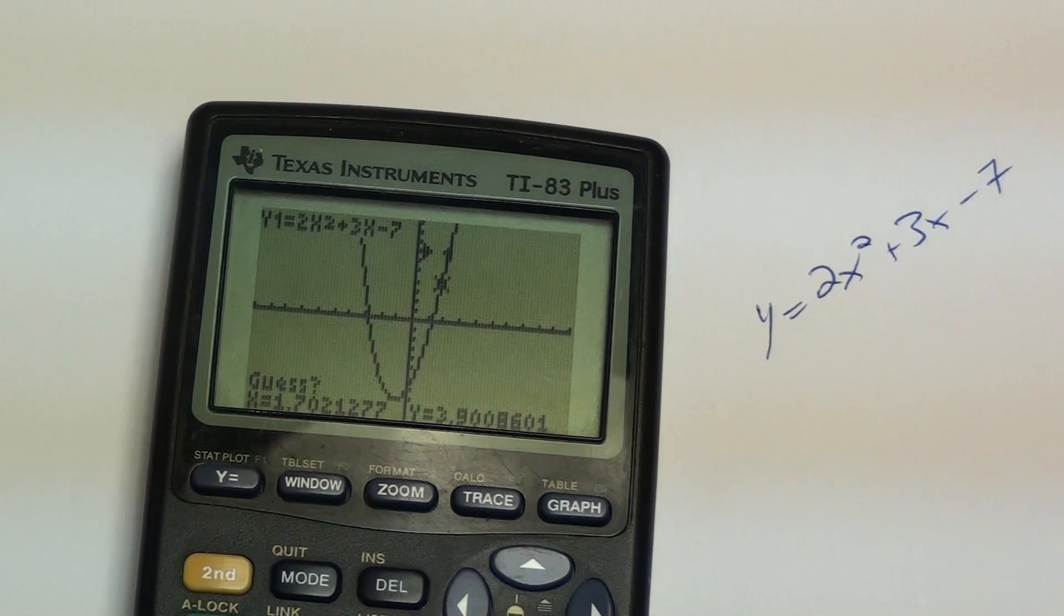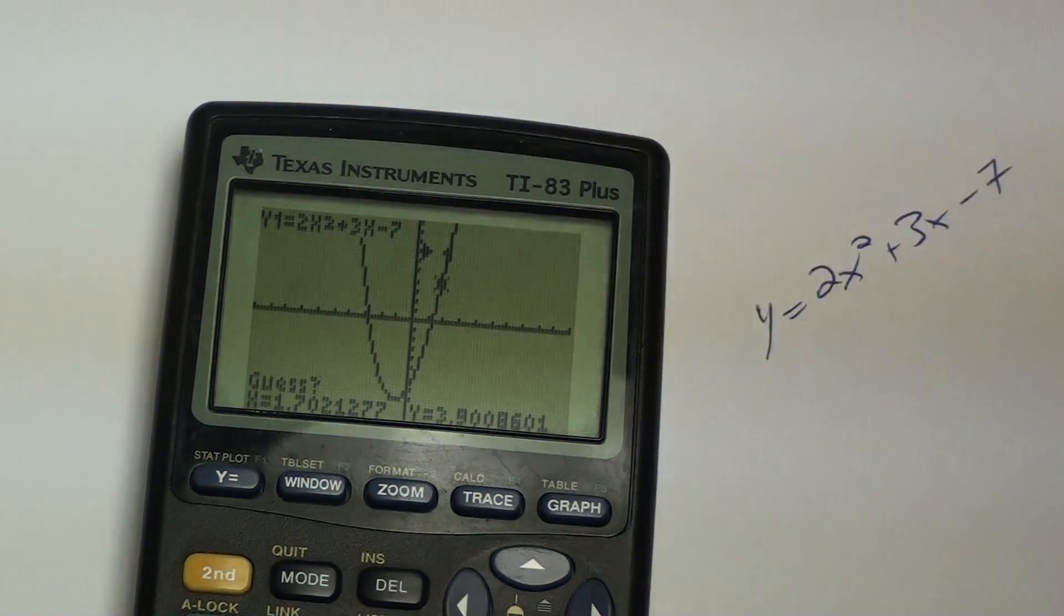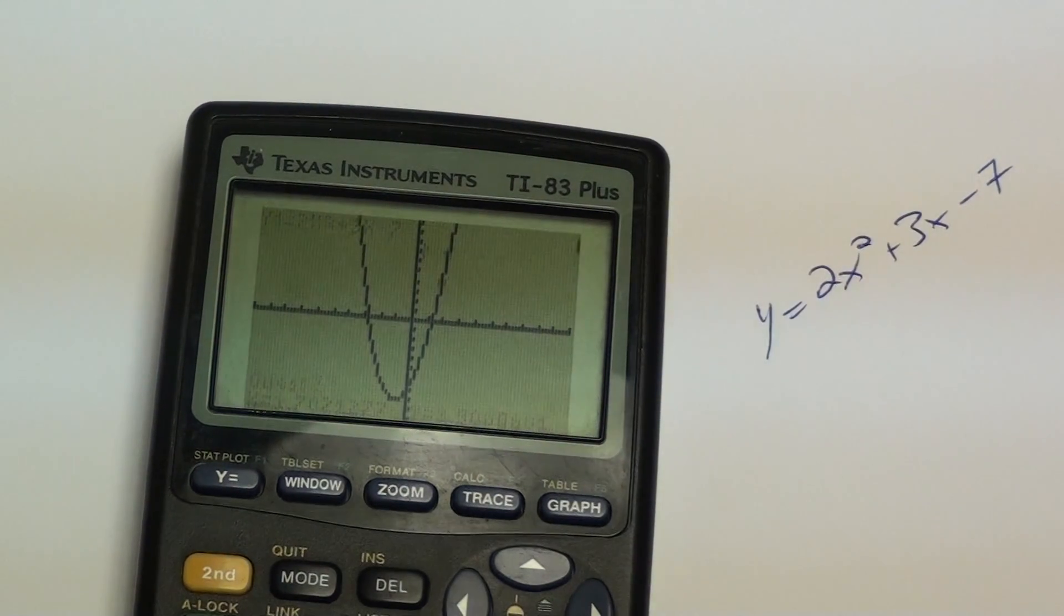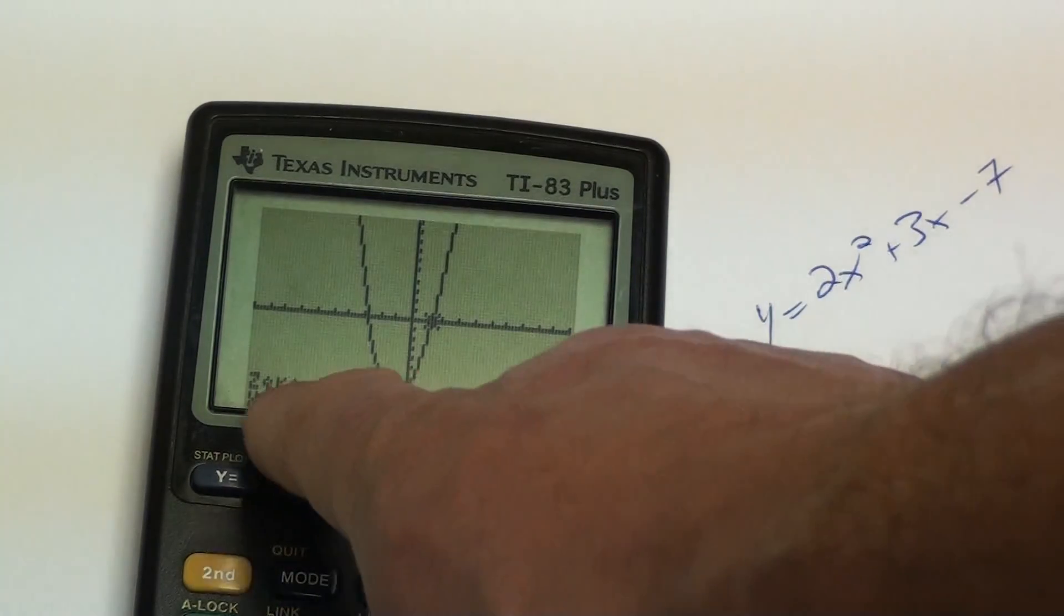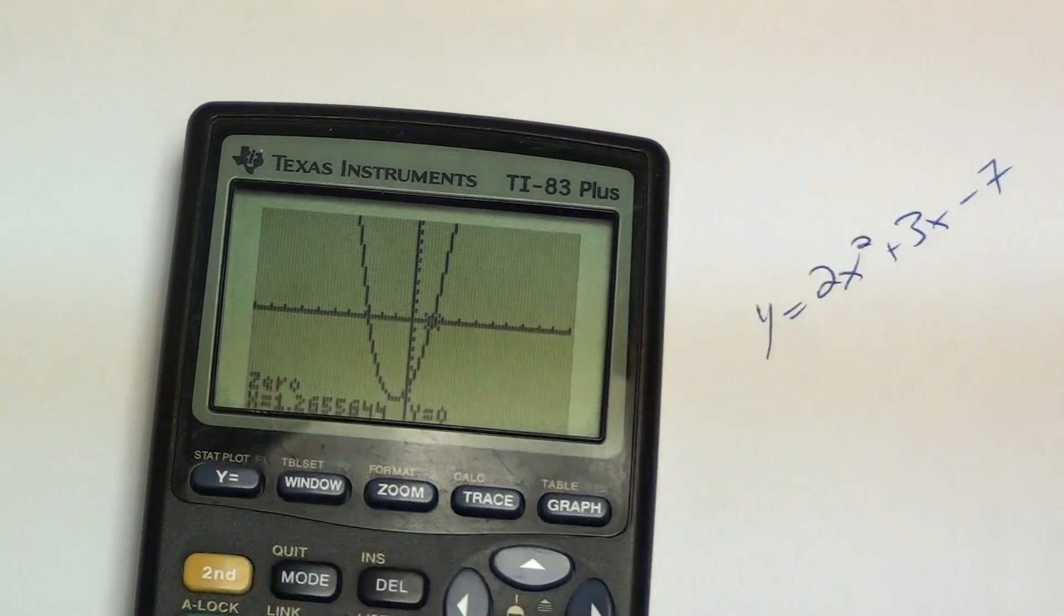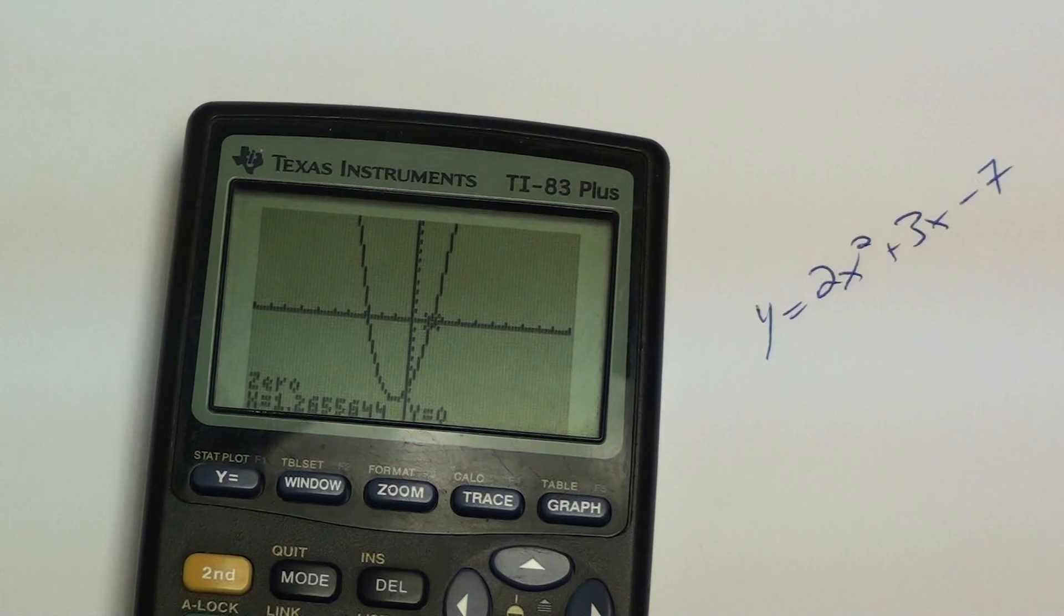And then it asks you to guess. And you're going to hit enter a third time. That will give you that x-intercept, which is 1.2655. That gives you that x-intercept right there.